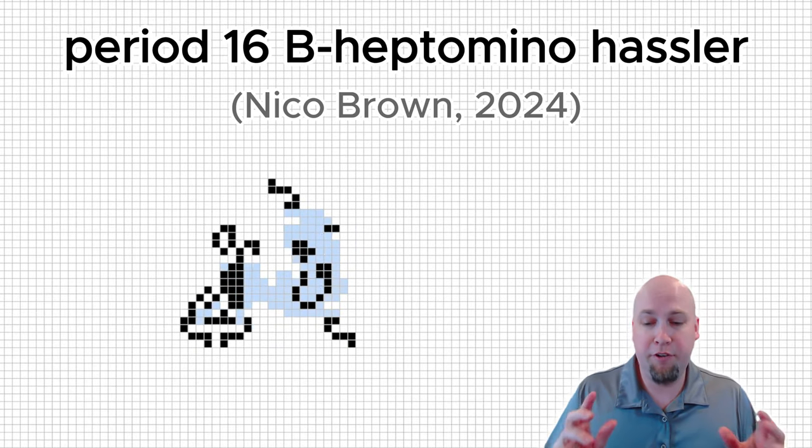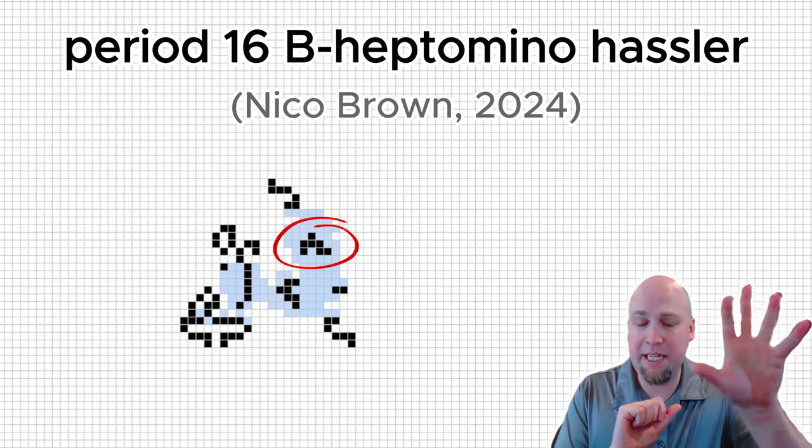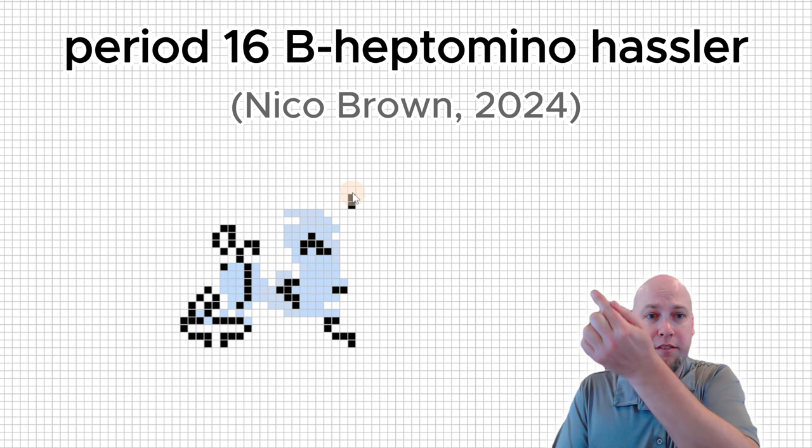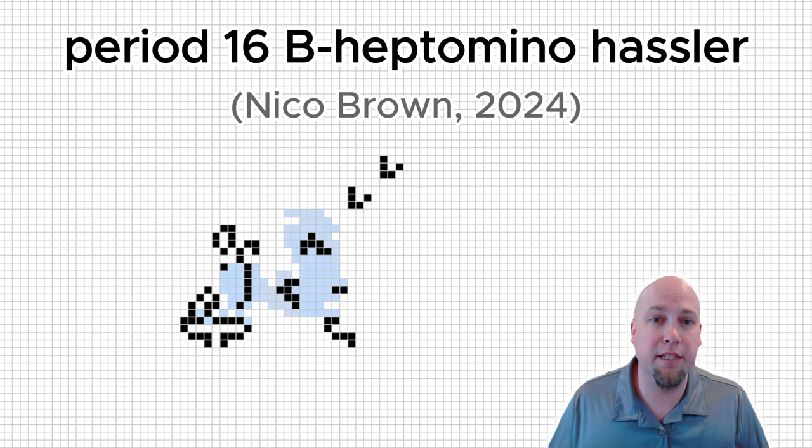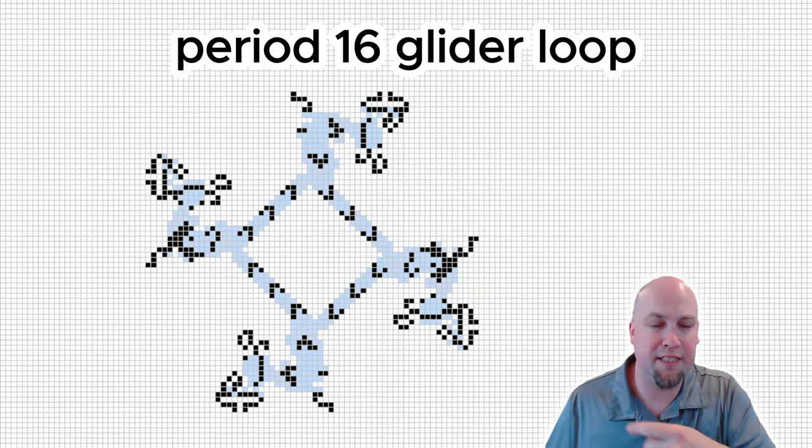Now, this destroys the B-heptomino, but it's still useful because you can combine it with other oscillators that we already know that create B-heptomino. So, for example, if you use a period 15 or 16 oscillator that sort of shoots off a B-heptomino, then you can bounce gliders off of it, creating a brand new oscillator with the same period and sort of makes gliders go around in a loop like this oscillator up here.